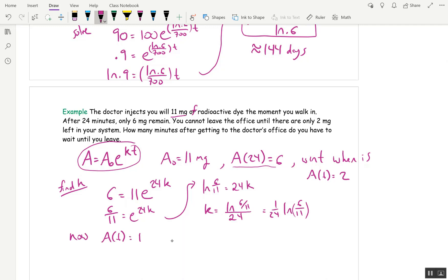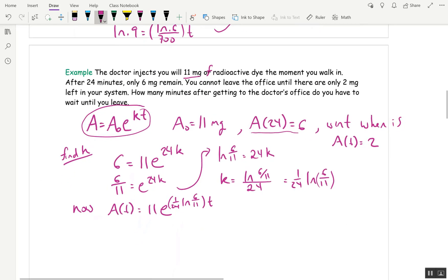So now we have A(t). We know A₀ was 11. A(t) equals 11e to the k, which is 1 over 24 ln of 6 over 11, all times t. You need parentheses there, so it's clear you're not taking the natural log of t, which you're not. I'll make that bigger so you can see it. Okay. So now we're ready to solve the problem.